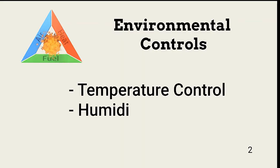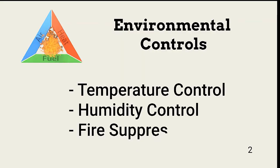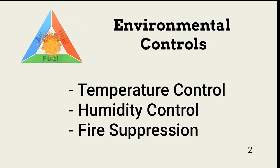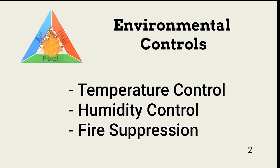Three environmental control categories are important considerations for maintaining data center health: temperature, humidity, and fire suppression. In addition to implementation, each of these must be monitored and regularly checked for proper operation.